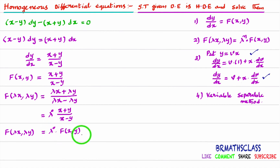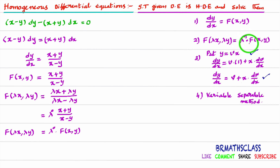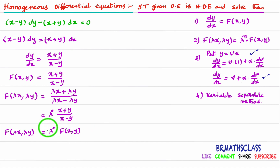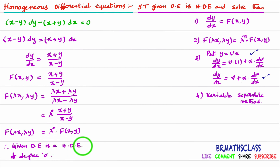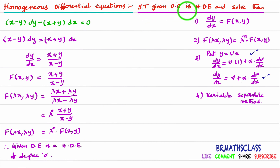Since we are able to express f(λx, λy) in the form λⁿ · f(x, y), we conclude that the given differential equation is a homogeneous differential equation of degree 0. We have now shown that the given differential equation is homogeneous.